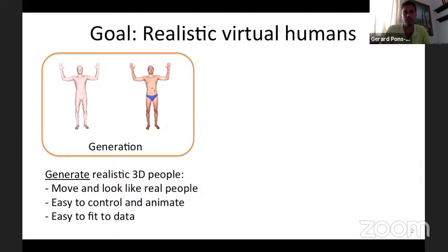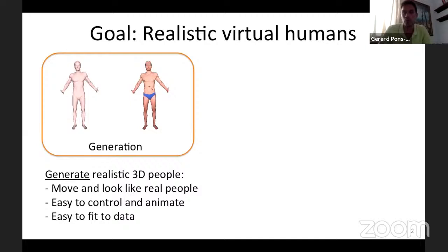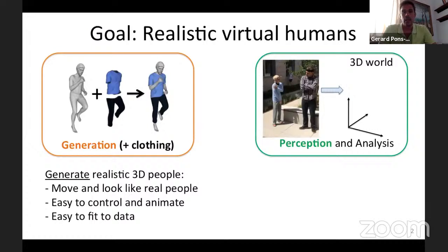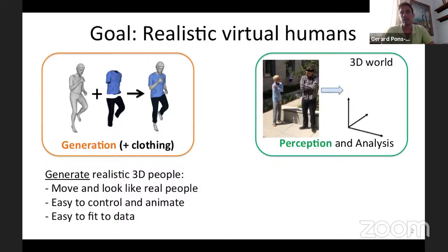When it comes to modeling people without clothing, we have a good understanding of how to do it. But when it comes to modeling clothing, there are many open challenges, because clothing comes in many different topologies, geometries, and appearances — making the learning problem much harder but also very interesting. The other side of the problem is perception: given some input data that is noisy or missing the depth dimension, we want to infer a 3D representation of what we're seeing.